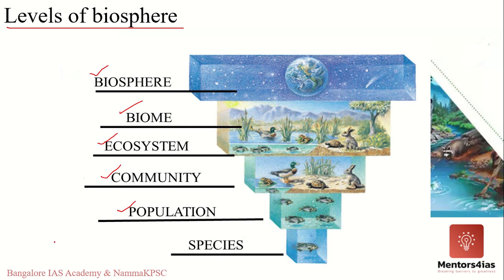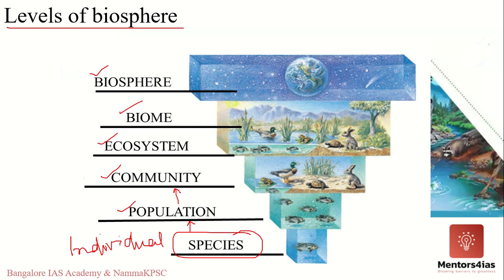An individual represents a particular species. A population is a group of individuals within the same species, within the same area, capable of reproducing with one another. A community is defined as the population of two or more species within the same geographical area and time period. An ecosystem is a community along with its abiotic — non-living — components such as air and water.